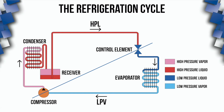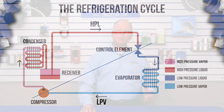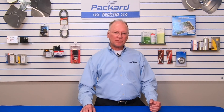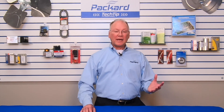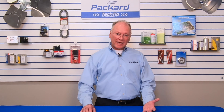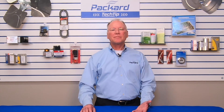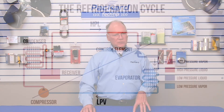As the refrigerant goes through the condenser, it is changed from a vapor into a liquid by removing heat from the refrigerant in the condensing unit. That liquid refrigerant then continues to the evaporator. The pressure of that refrigerant is changed as it goes into the evaporator, and it becomes a lower-pressure liquid — it stays a liquid, but now at a lower pressure.